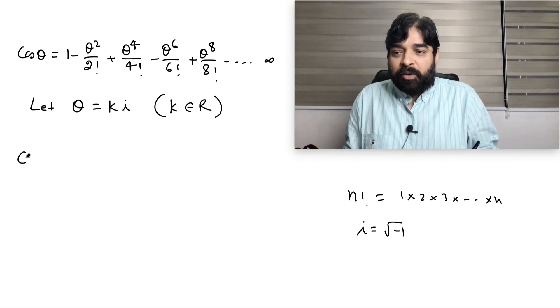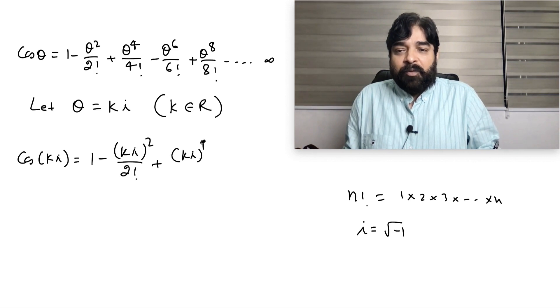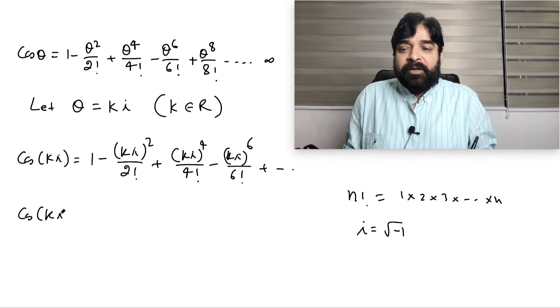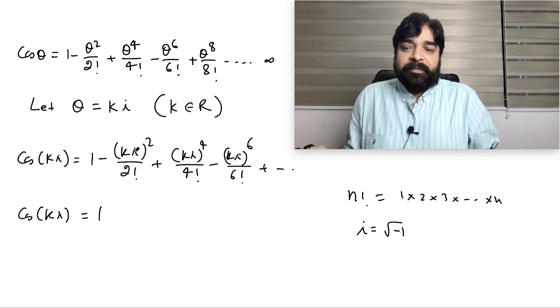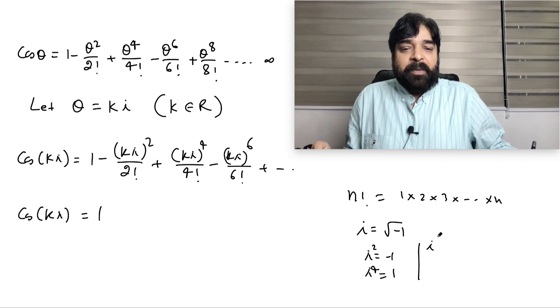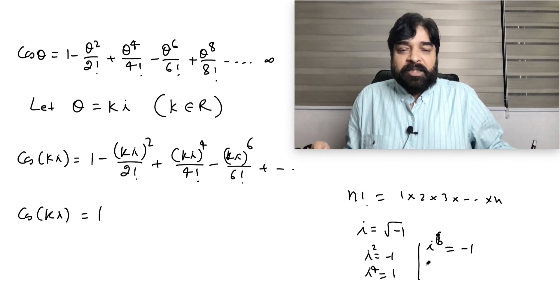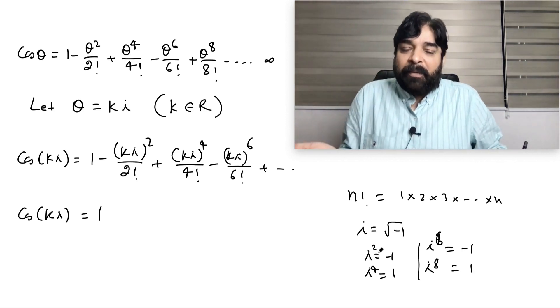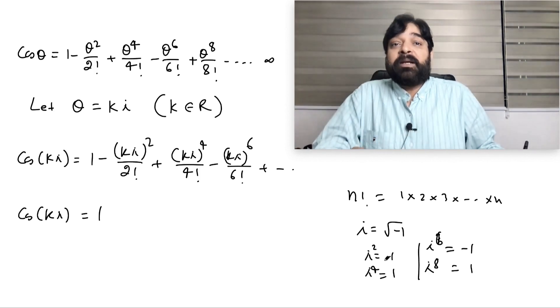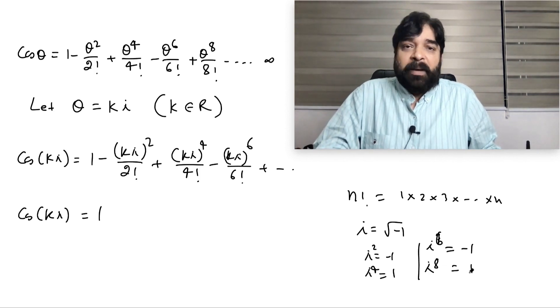Let's put it here. cos(ki) will equal 1 minus (ki)² / 2! plus (ki)⁴ / 4! minus (ki)⁶ / 6! and so on. So cos(ki) will equal 1, and k² and i² - remember i² is minus 1. i⁴ is 1, i⁶ will be minus 1, i⁸ will be 1. Whenever i power is even number, if it's multiple of 4 it will be 1, but if it's an even number but not multiple of 4, it will be minus 1.